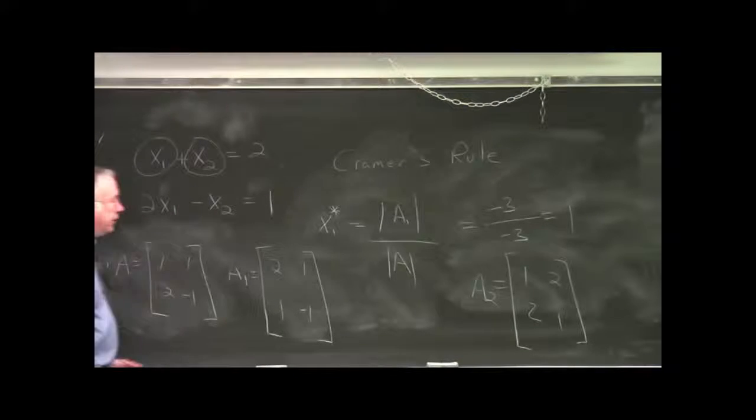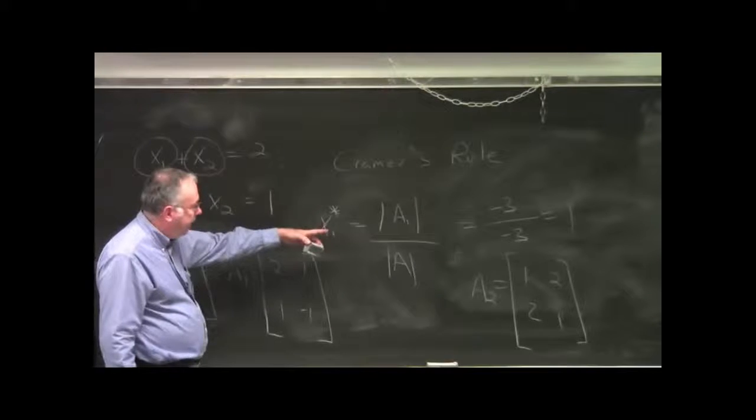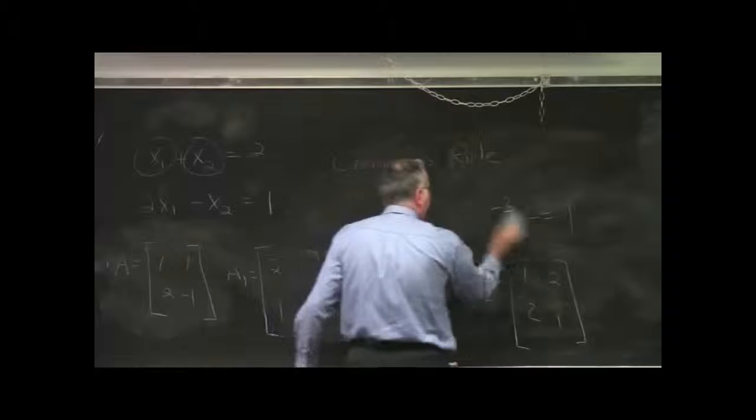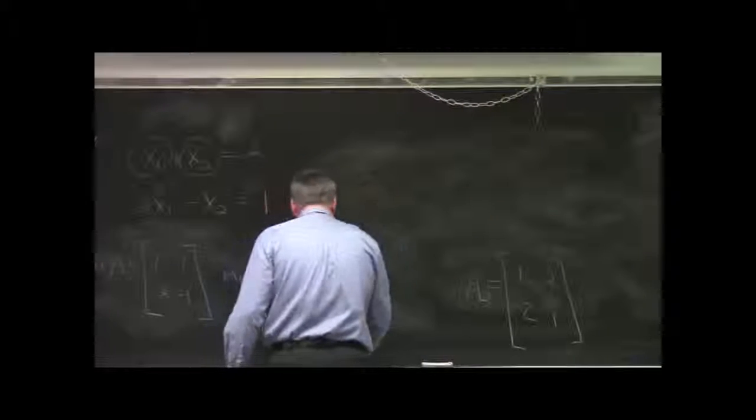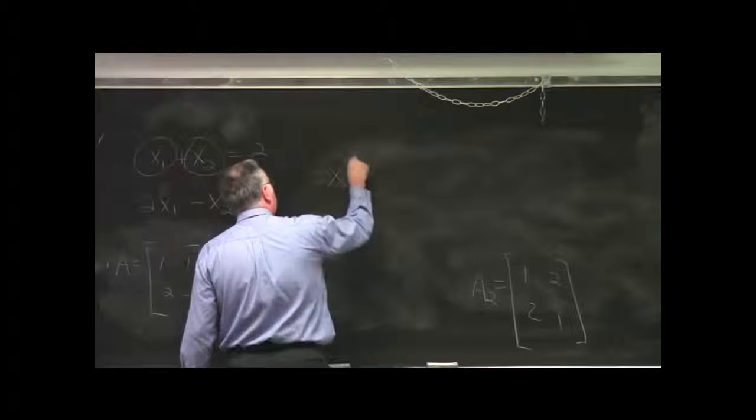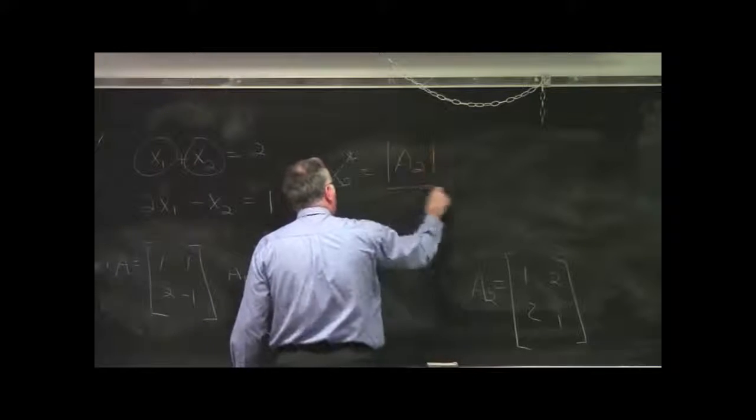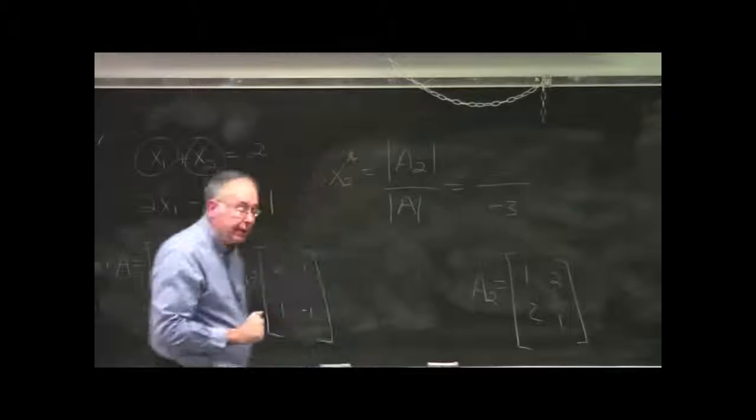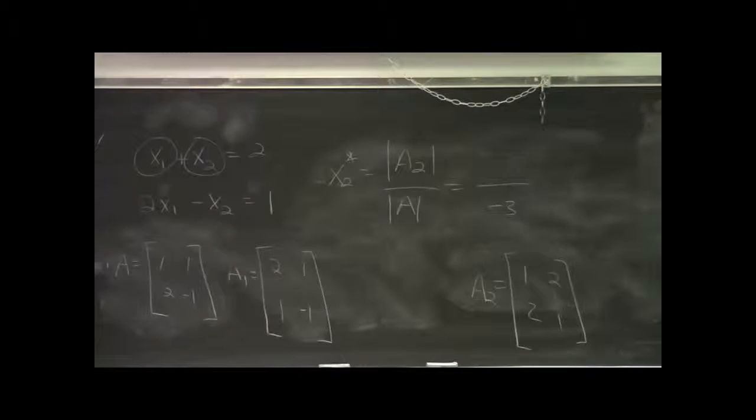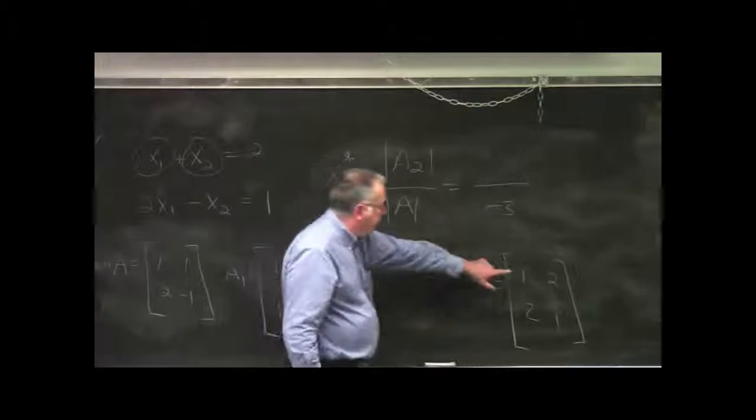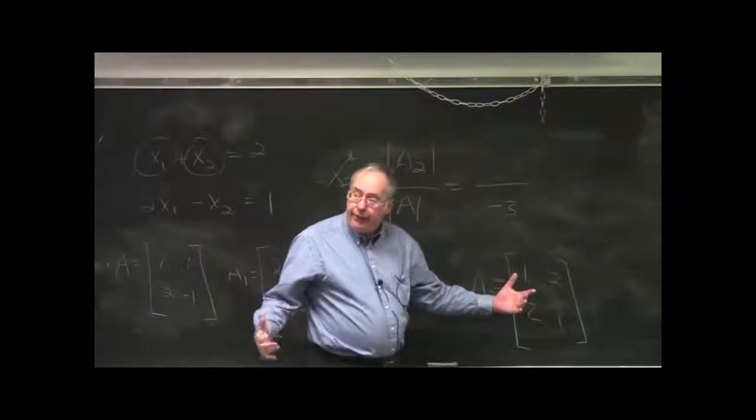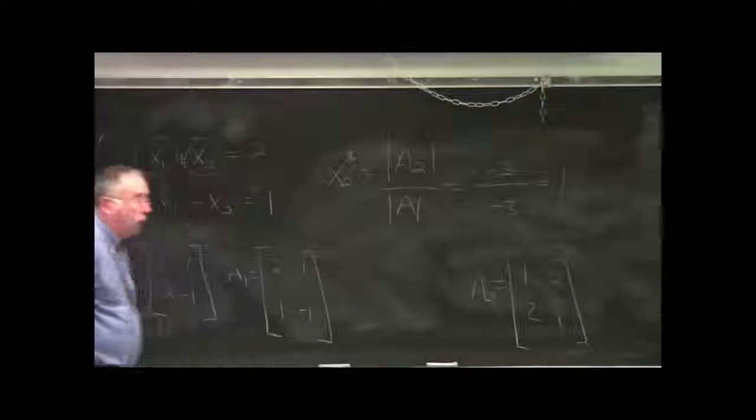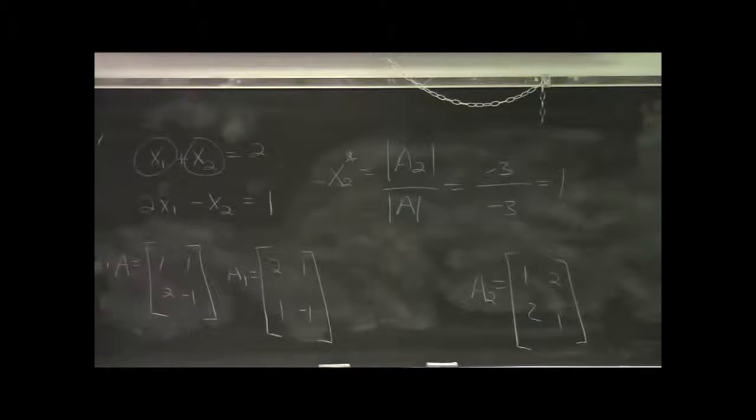Now x2 star is just a similar formula, except it's the determinant of A2 over the determinant of A. So x2 star is just this. We know that the determinant of A is minus 3, that goes in the denominator. What is the determinant of A sub 2? It is 1 minus 4, negative 3. So again, it's minus 3 over minus 3. x2 star is 1, which is comforting because that's the same solution we got using the inverse method.